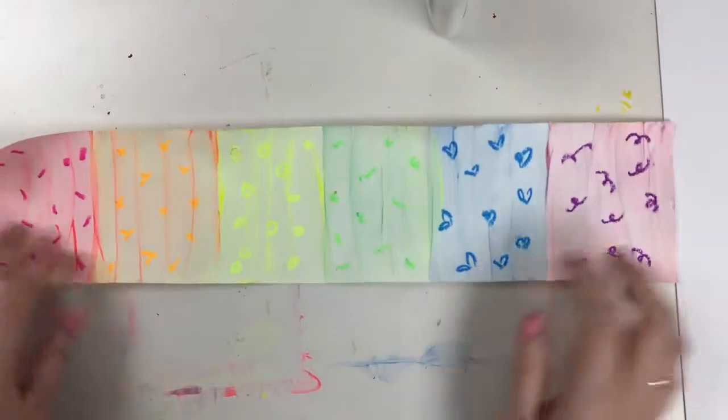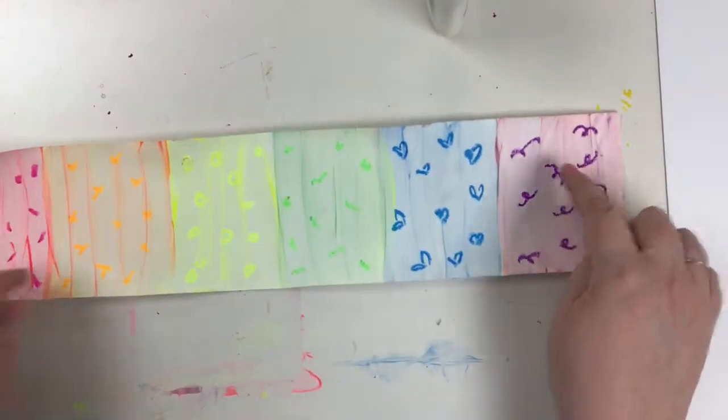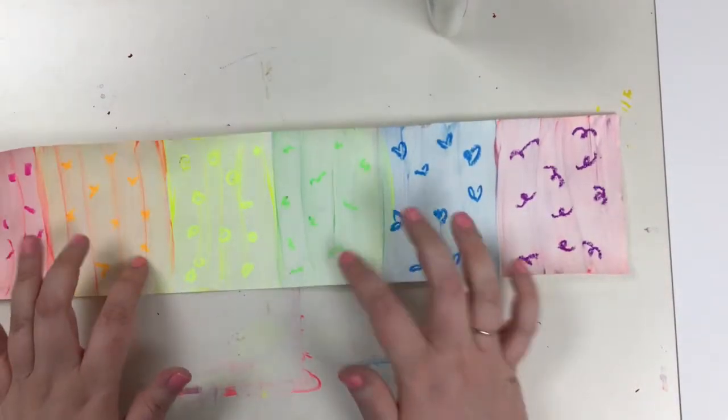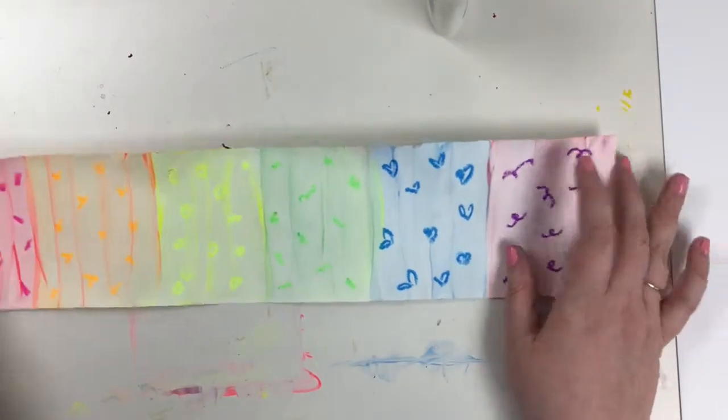Alright, last week we painted our rainbow paper and we mixed colors to make orange, green, and purple. Today we're going to turn these into scoops of ice cream.